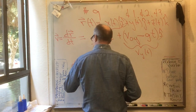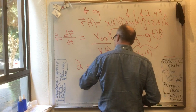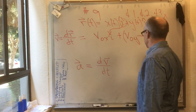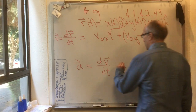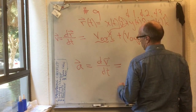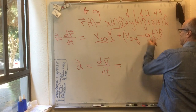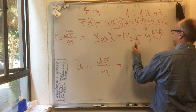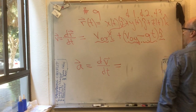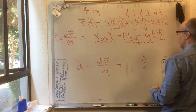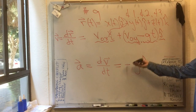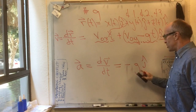Now let's get the acceleration, which equals dv dt. v naught x is a constant, so its derivative is zero. v naught y times j-hat: j-hat is a constant, so that gives nothing. We just have the derivative of minus g t times j-hat, and d by dt of minus g t is minus g. So the acceleration during projectile motion is minus g in the y direction.